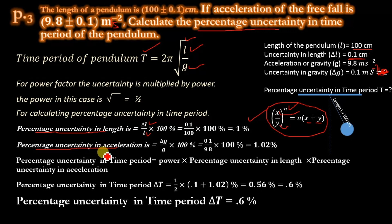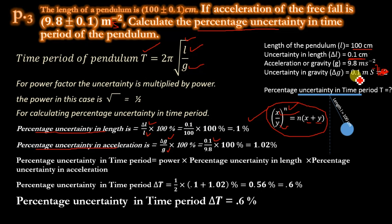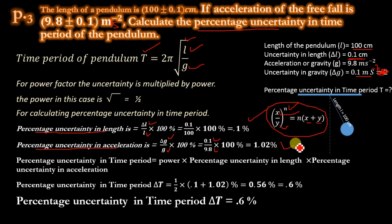For the percentage uncertainty in acceleration: (δg / g) × 100%. δg is 0.1 m/s² and the measured value g is 9.8 m/s². Multiplying by 100% gives 1.02%. So 0.1% is the percentage uncertainty in length and 1.02% is the percentage uncertainty in acceleration.